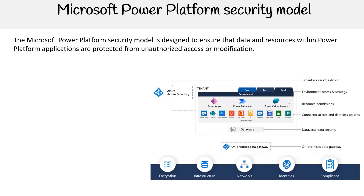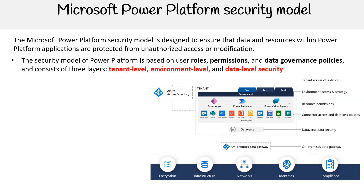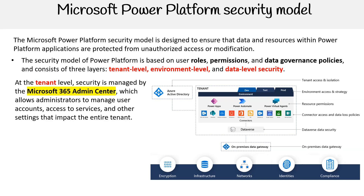The Microsoft Power Platform security model is designed to ensure that data and resources within Power Platform applications are protected from unauthorized access or modification. The security model is based on user roles, permissions, and data governance policies, and consists of three layers: tenant level, environment level, and data level security.